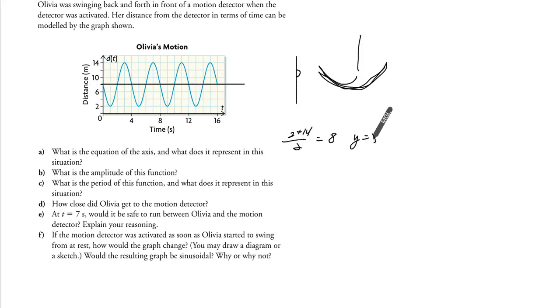So y equals 8 is the equation of the axis and that represents where she's actually swinging from. It's the location of where she's swinging from.